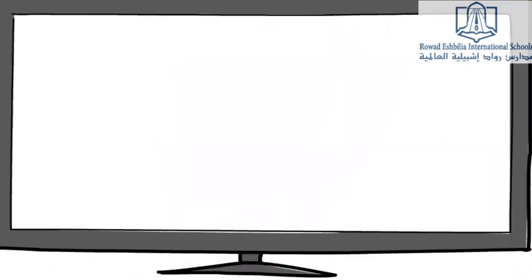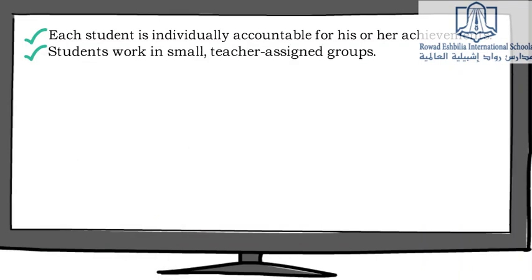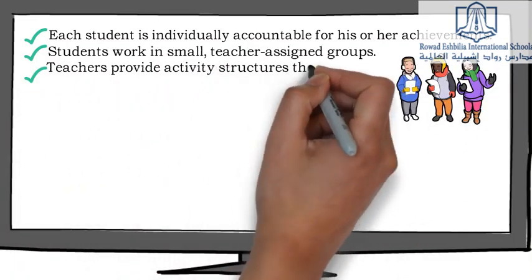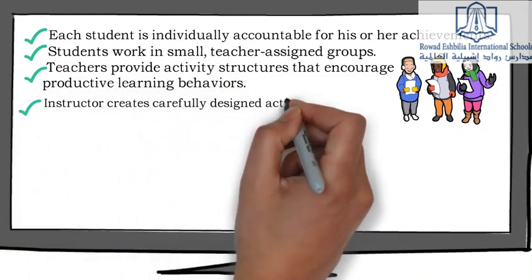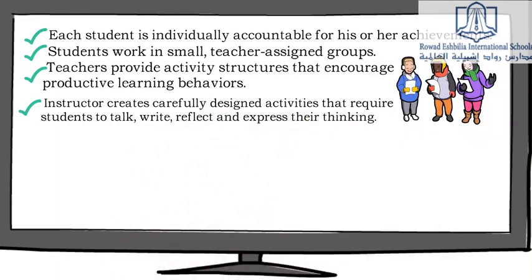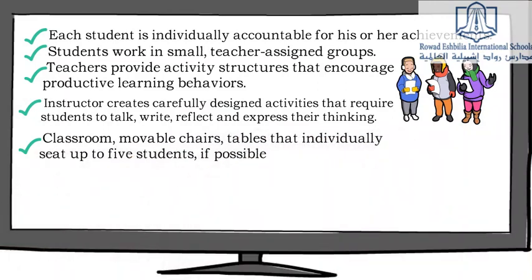In active learning settings, each student is individually accountable for his or her achievements. Students work in small, teacher-assigned groups. Teachers provide activity structures that encourage productive learning behaviors. The instructor creates carefully designed activities that require students to talk, write, reflect, and express their thinking.